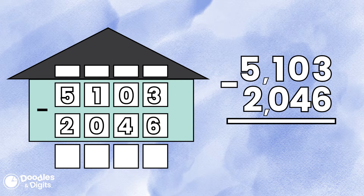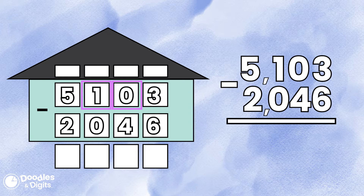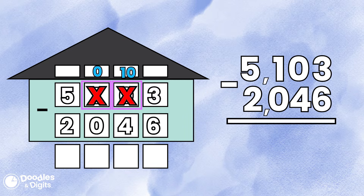We're going to start in the ones place. Three minus six — we can't subtract six from three, so we're going to have to borrow. Just like the problem before, we're going to go to the tens place. Wait a minute — there's a zero in the tens place, so we're actually going to have to borrow from the hundreds place. I'm going to borrow from the hundreds place, carry to the tens place, and then carry one more time.